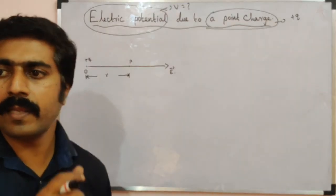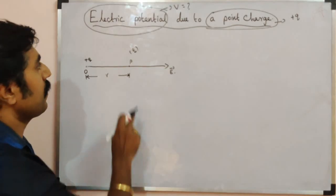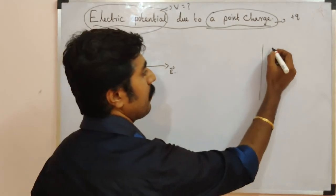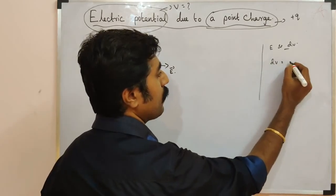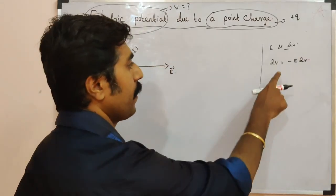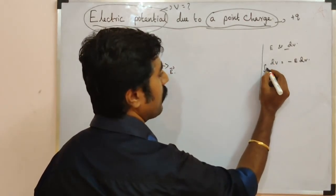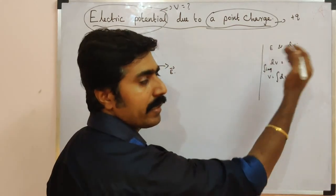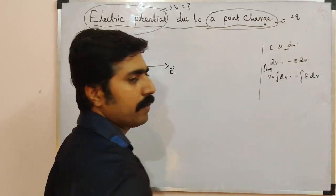The question is: what is the electric potential at point P? We know the relation between electric field and potential difference. The formula is: dV = −E·dR. So integrating both sides, V = ∫dV = −∫E·dR.